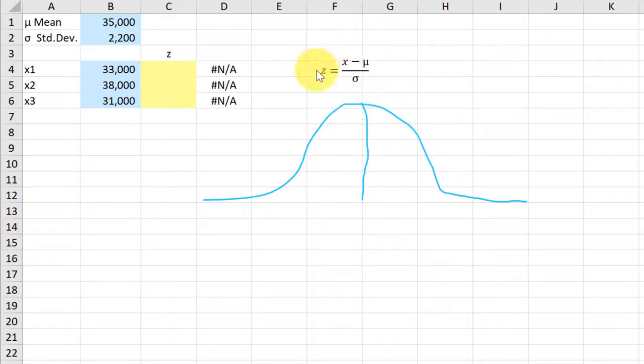We're going to use this formula, which is Z, the Z-score, is equal to the x-value minus the mean mu divided by the standard deviation.